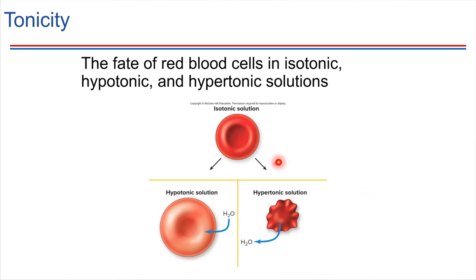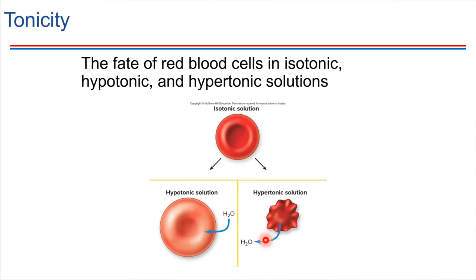The other extreme is possible too. If we were to put a red blood cell into a solution that is hypertonic — something that's either really salty or really sugary — then that's going to draw the water out of the cell and cause the cell to shrivel up. This is called crenation; the cell crenates in that case.